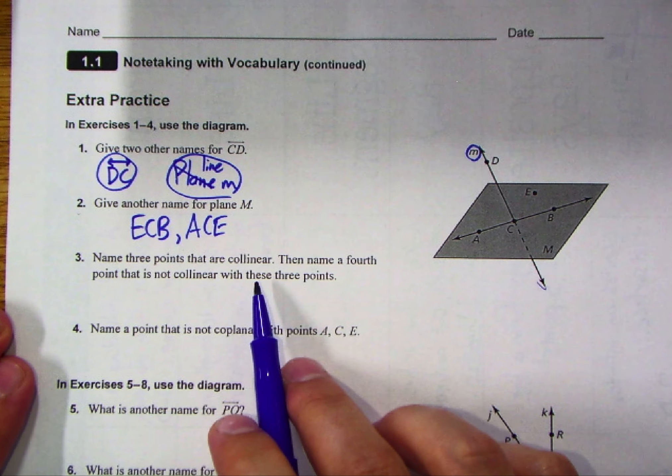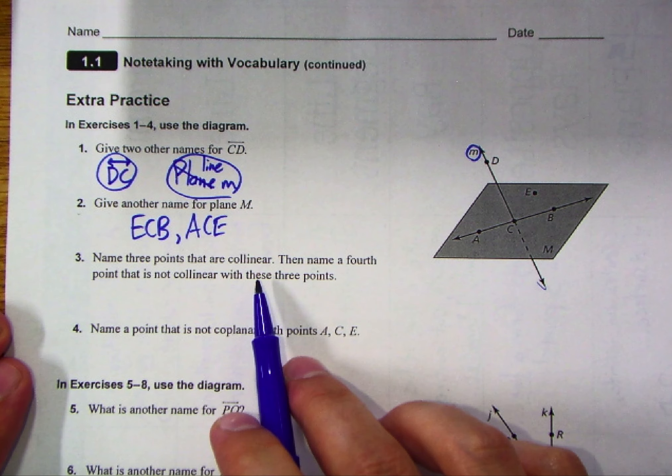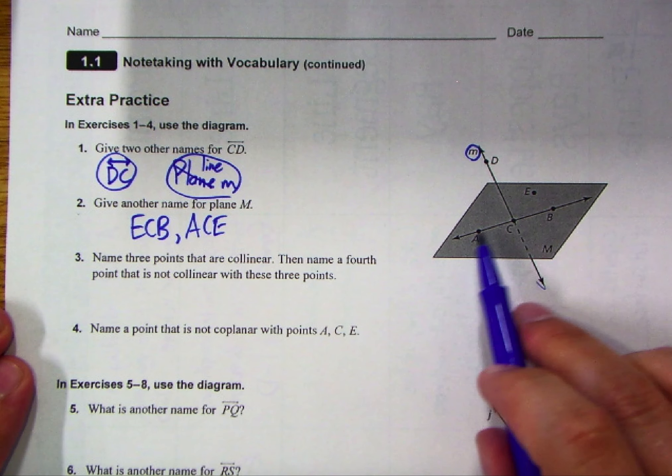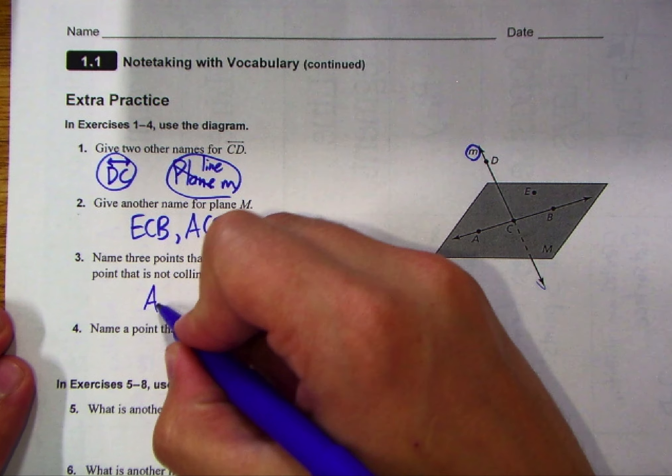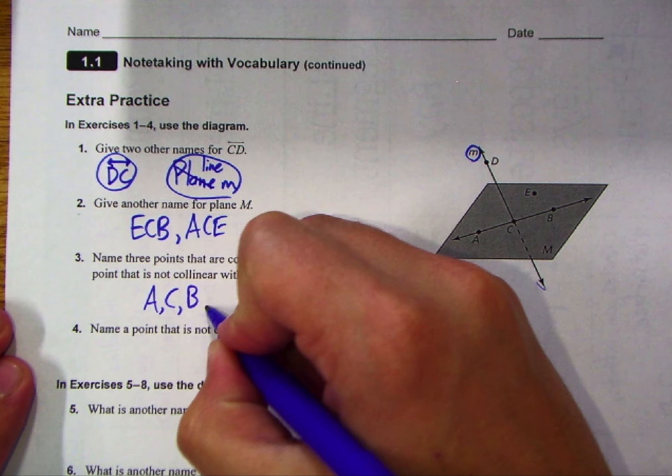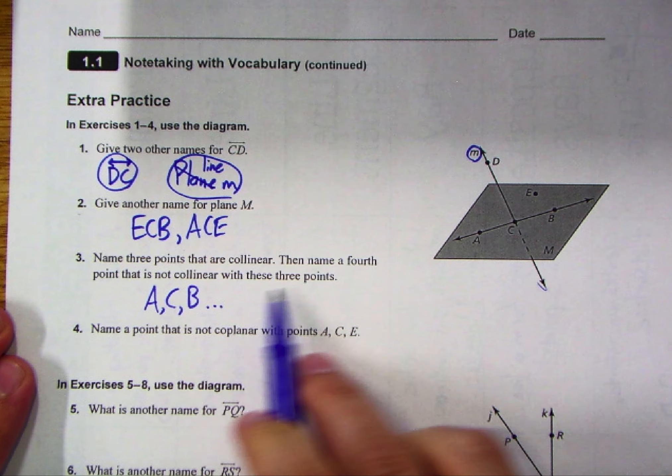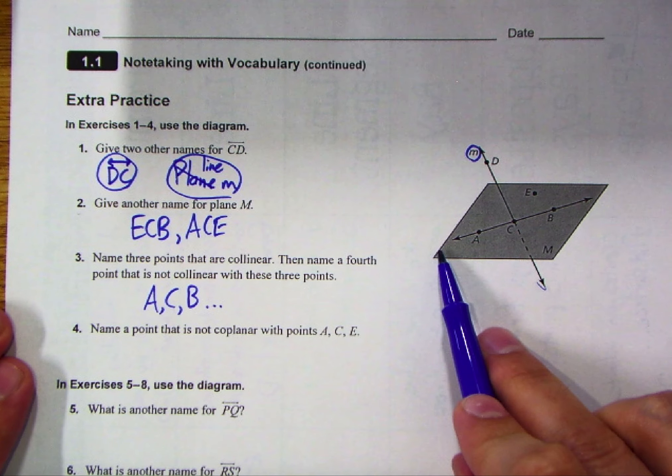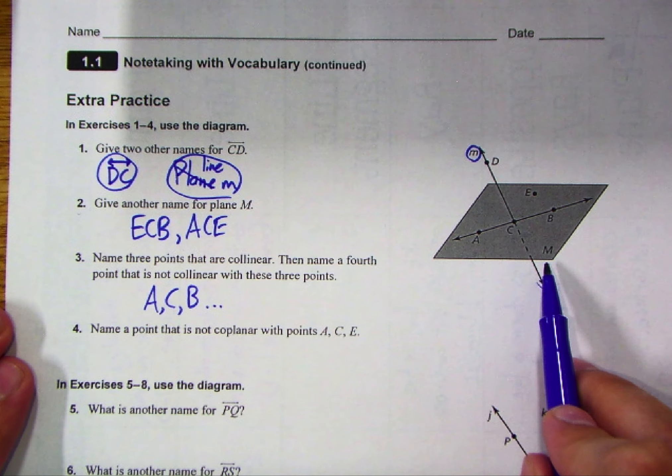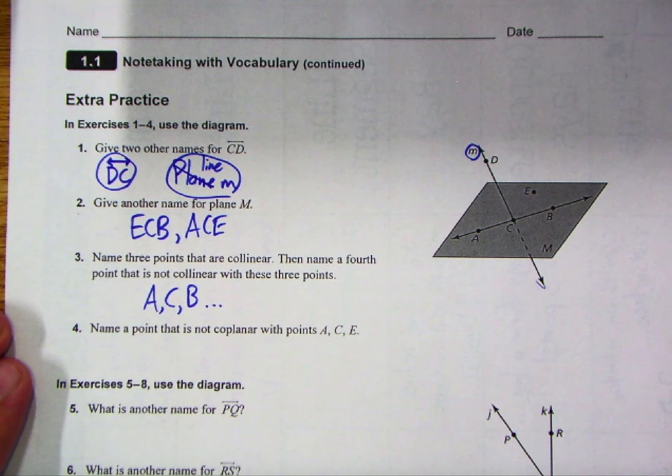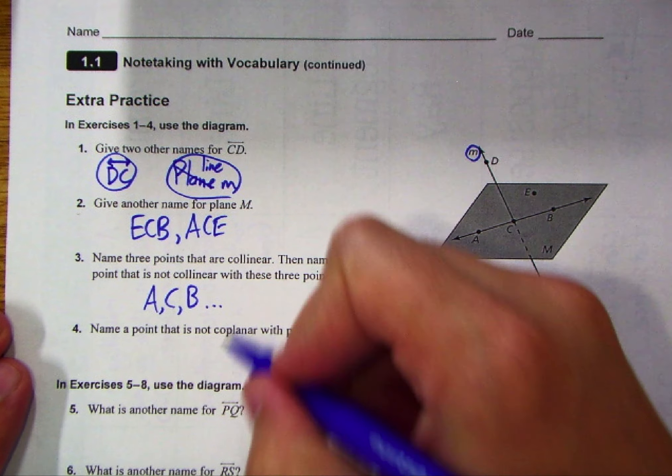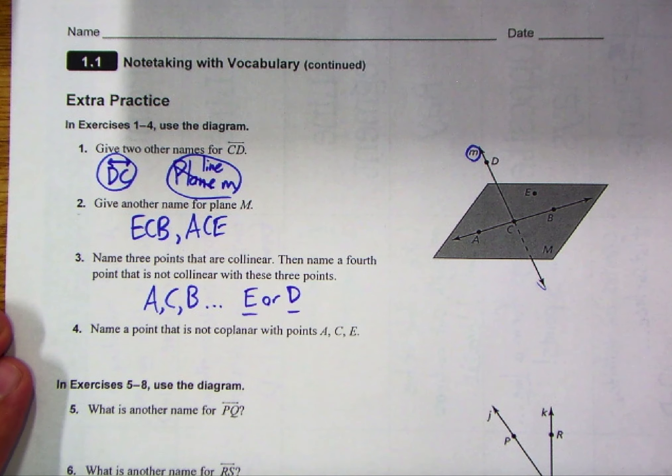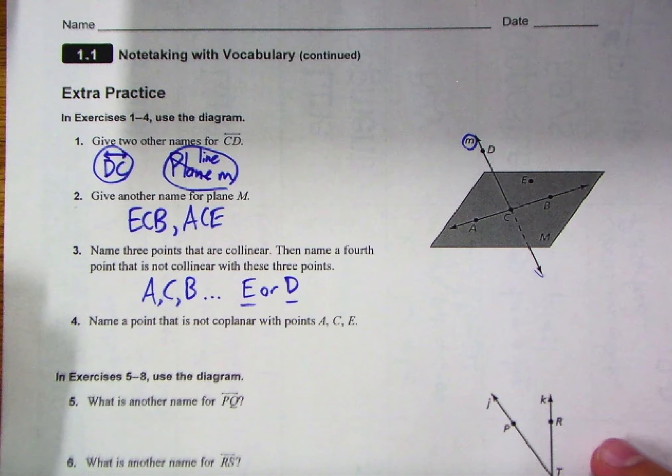Next up, name three points that are collinear. That means all three lie on the same line. And in this case, we see this line here clearly has three points marked. So let's go with A, C, and B. Then name a fourth point that is not collinear with these three points. So long as it's not on that line, we're good. Again, keep in mind capital M and lowercase m are not points though. So we're really only left with E or D as our two main options. So either one of those would not be collinear with those three.